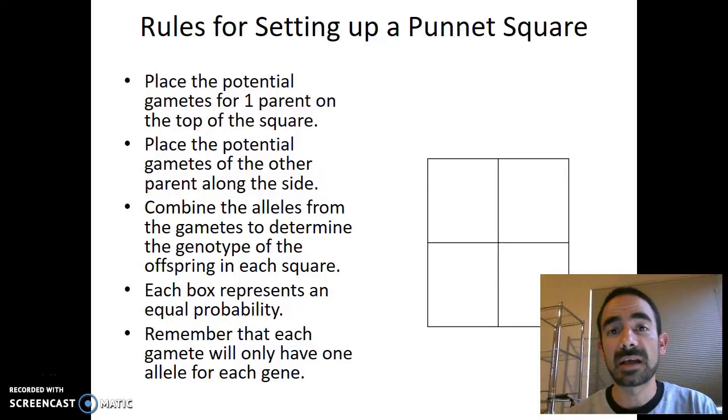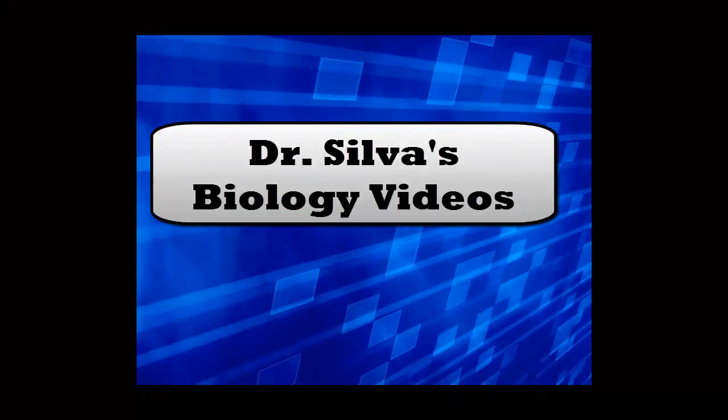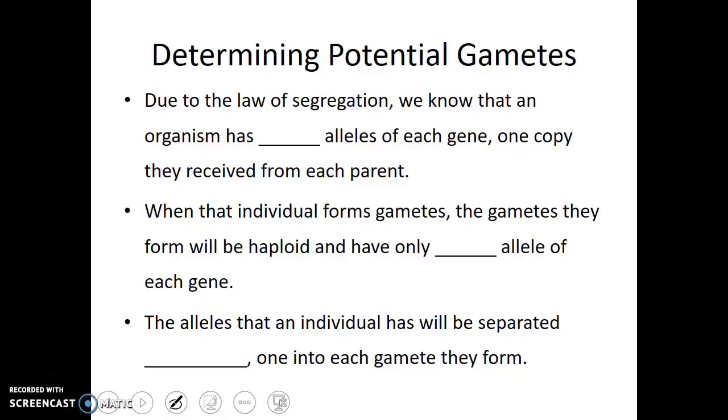In this video, we're going to learn how to set up a Punnett square for a monohybrid cross. Now that we've learned about Gregor Mendel's law of segregation, we're going to see how we can use this information to answer questions about genetic crosses.